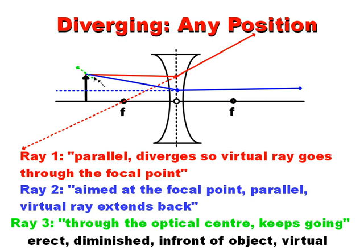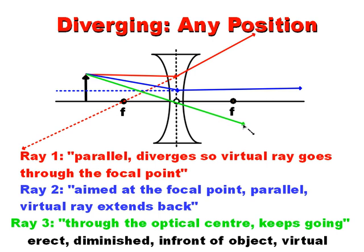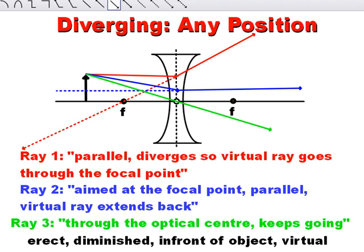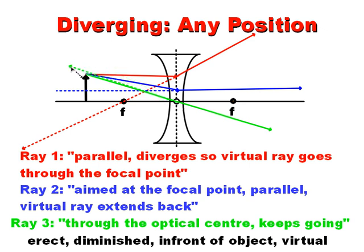The last ray goes straight through the optical center, and you can also extend it back as a dotted virtual line. There's our image — it is virtual, diminished, erect, and in front of the object. And that's every scenario you can basically get with a thin lens. For more information and practice questions on thin lenses, including the math, visit my website, ldindustries.ca.